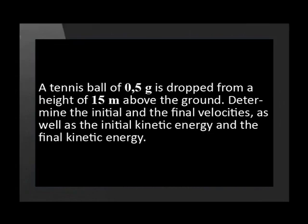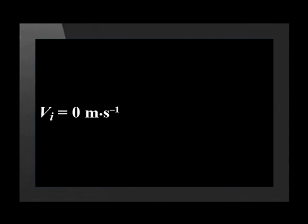The following example illustrates that positive work done on an object increases its kinetic energy. Here the force of gravity does positive work. A tennis ball of 0.5 grams is dropped from a height of 15 meters above the ground. Determine the initial and final velocities as well as the initial and final kinetic energies. The initial velocity is zero, because the ball was dropped from rest.